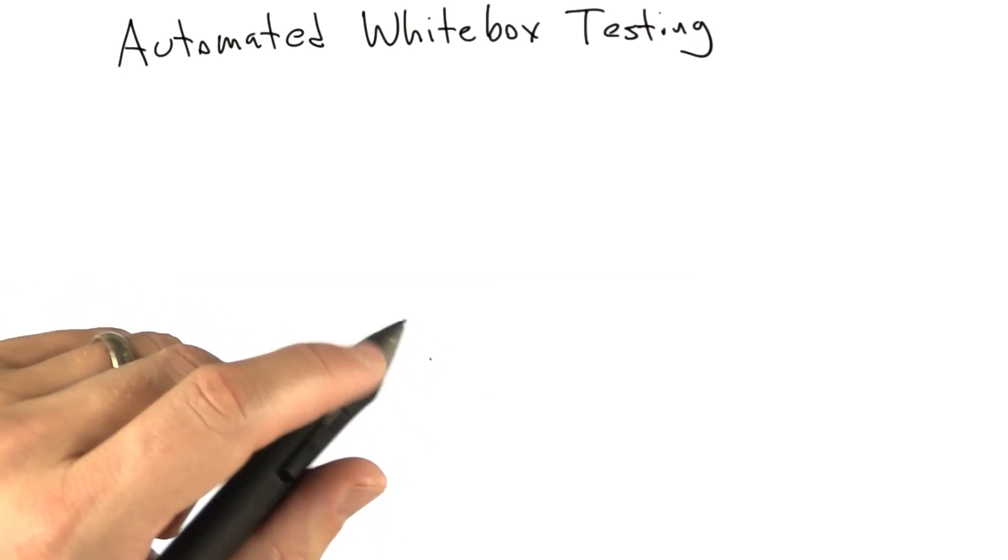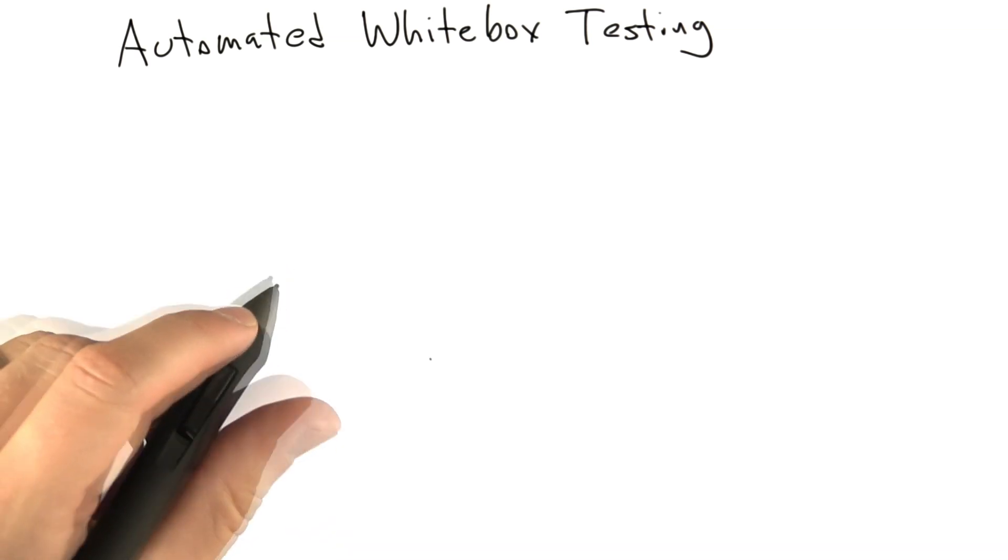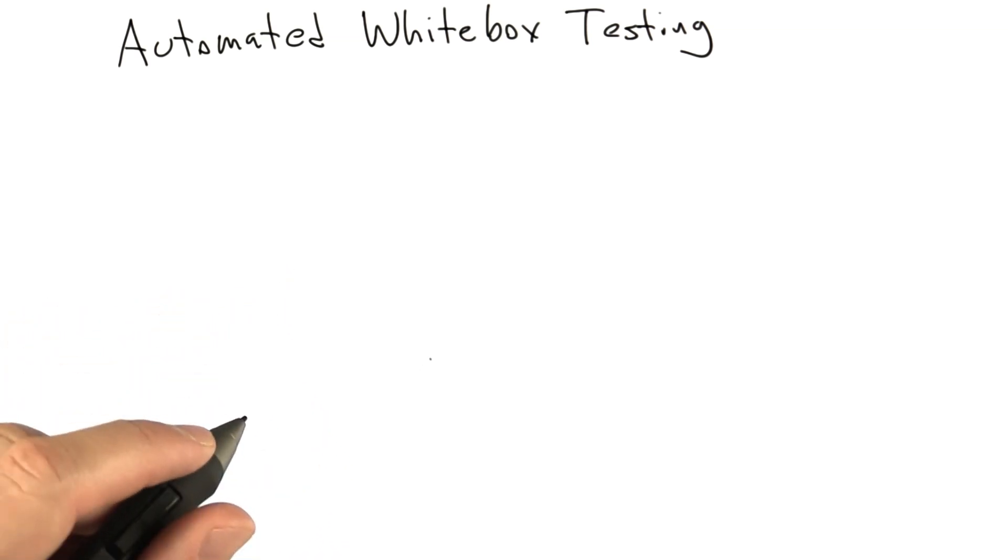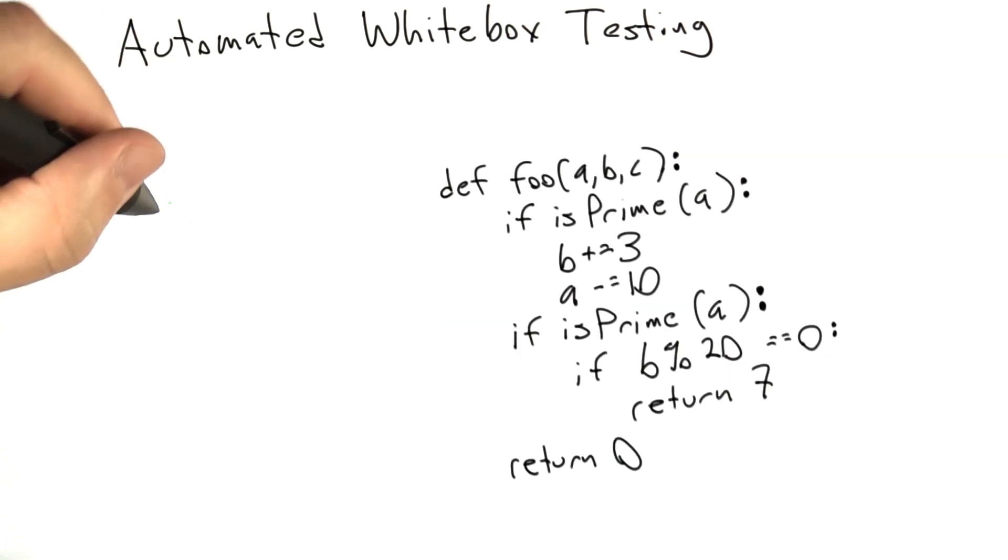The next topic we're going to cover is called automated white box testing. This isn't a form of code coverage, but rather a way to get software tools to automatically generate tests for your code. So you wrote some code, and the question we're going to ask is, how to generate good test cases for it.